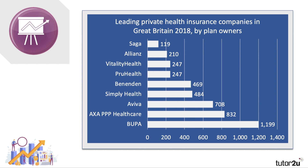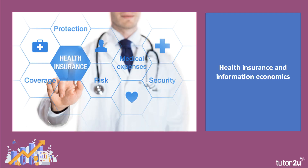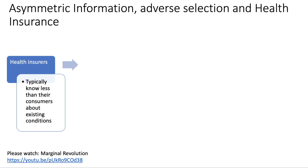Here's an example of insurance in action — these are the leading private health insurance companies in Great Britain by plan owners. BUPA is the biggest, AXA PPP is second, followed by Aviva, Vitality Health, and Alliance. Only about seven million people in the UK take out private health insurance, and many can't afford it. One key concept to focus on here is adverse selection, which stems from asymmetric information.